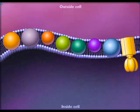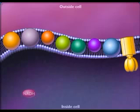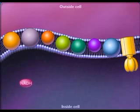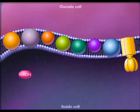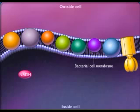During glycolysis and the tricarboxylic acid cycle, oxidation of organic molecules results in production of reduced coenzymes such as NADH. These coenzymes transfer hydrogens to the electron transport chain, which is located in the bacterial cell membrane.